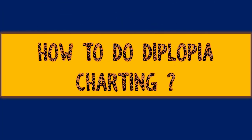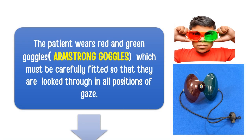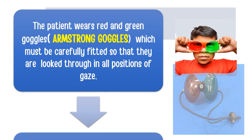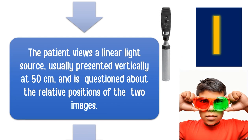To perform diplopia charting: step one is to make the patient wear red-green goggles, called Armstrong goggles, which must be carefully fitted so that they are looked through in all nine positions of gaze. Step two is to give the patient a linear light source — you can use a retinoscope to create this on a blackboard, whiteboard, or wall. The distance between the patient and the wall is usually about 50 centimeters.